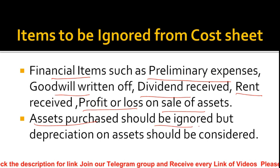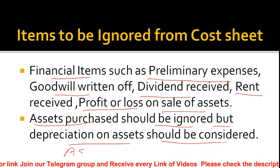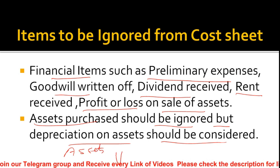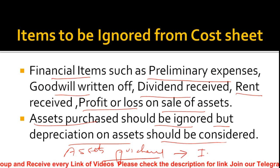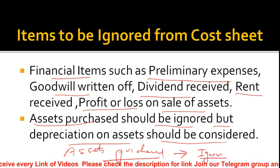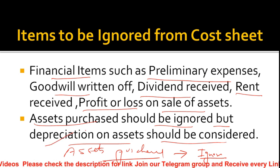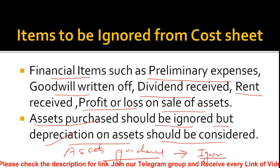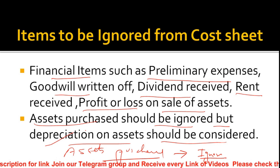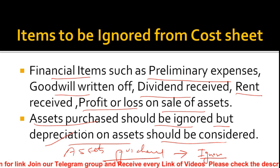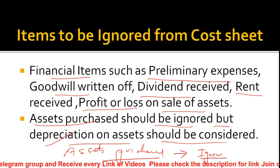Assets purchase should be ignored in the cost sheet, but depreciation on assets should be considered. So if you have an asset purchase entry, ignore it. But if you have a depreciation entry, include it. For example, depreciation on factory building goes into factory overheads, and depreciation on computer and depreciation on delivery van are also to be included accordingly.